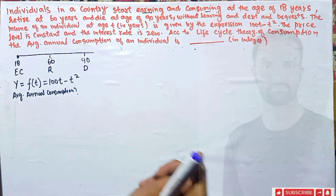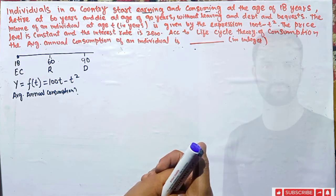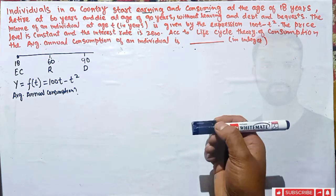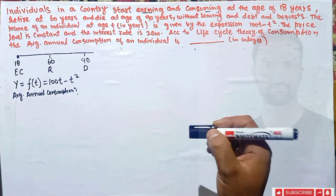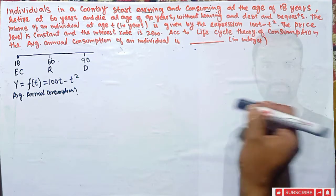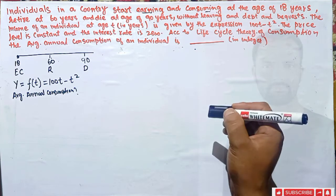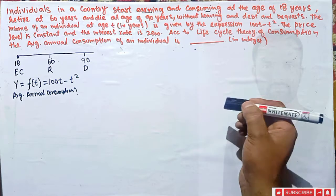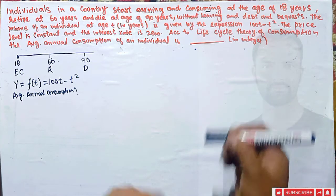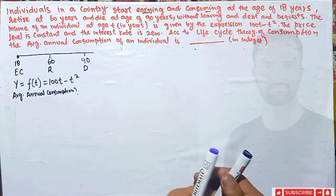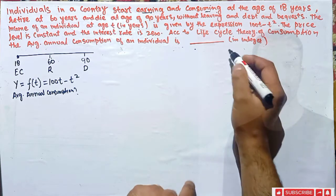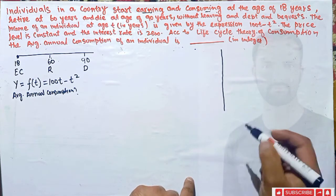The life cycle theory of consumption tells us that individuals plan their consumption and saving behavior over their entire lifetime. They tend to smooth out their consumption over their lifetime — they save when they work and then dissave when they retire. This is the main crux of the life cycle hypothesis.